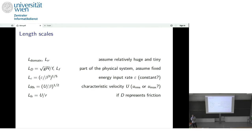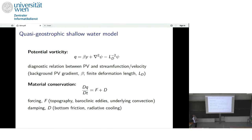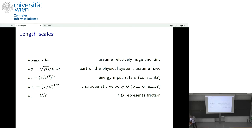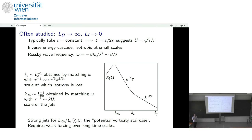There's a forcing length scale that you can construct from an energy input rate. There's also a Rhine scale, which we typically think of when we're talking about zonal jets, made up of some characteristic velocity and the beta. And a frictional length scale, if your D represents friction.